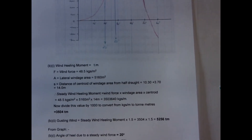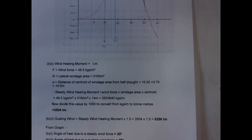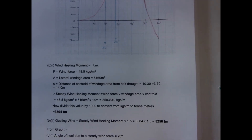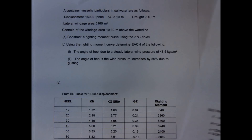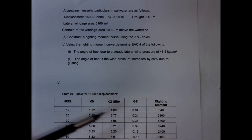So that's the typical wind heeling problem — 20 and 28 degrees. Be careful: you have to plot righting moments, not just GZ values. It's very straightforward once you have the GZ — simply multiply those values by the displacement of the vessel.